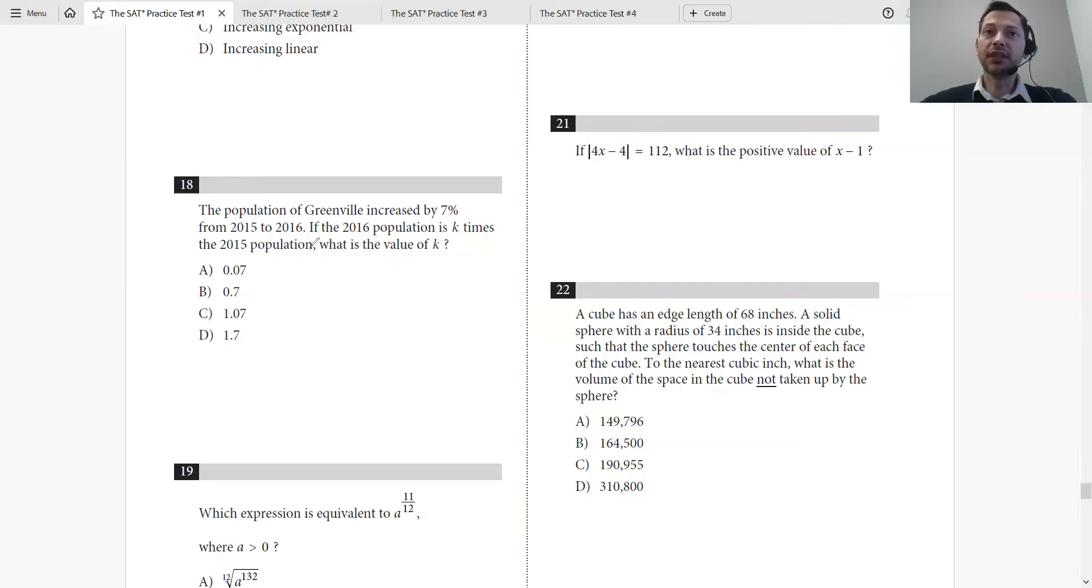If it increased by 7% from 2015 to 2016, so let's say in 2015 it was X, then in 2016 it would be 1.07 times X equals the 2016 population. Remember, to increase by 7%, we multiply by 1.07. And there you go, that's the answer, right there, C. Easy peasy.